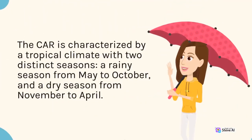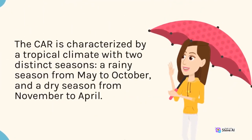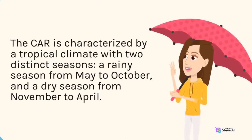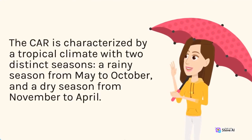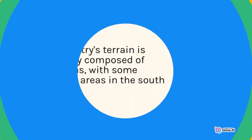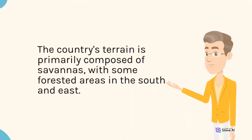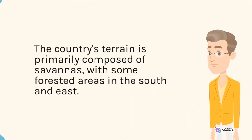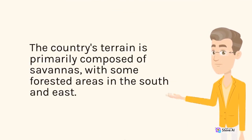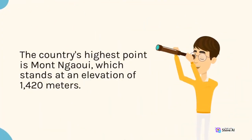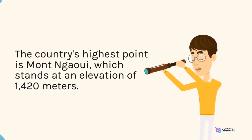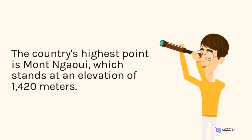The CAR is characterized by a tropical climate with two distinct seasons: a rainy season from May to October, and a dry season from November to April. The country's terrain is primarily composed of savannas, with some forested areas in the south and east. The country's highest point is Mont Ngaoui, which stands at an elevation of 1,420 meters.